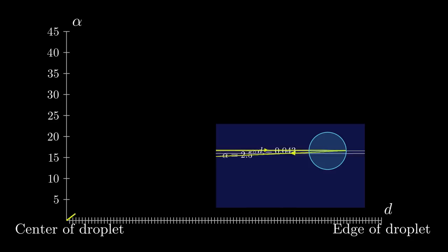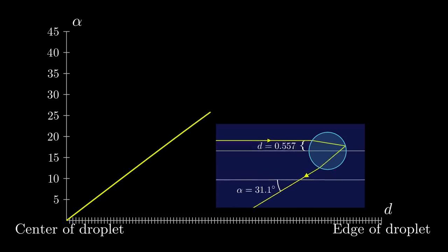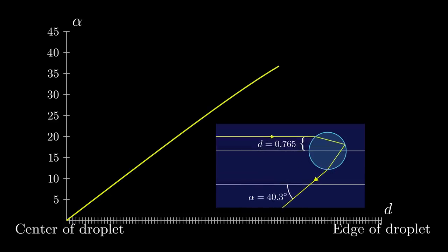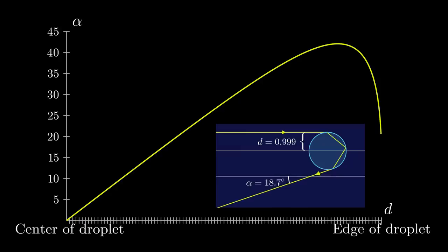We start at d equal to 0, which means that the ray hits at the center and the angle is 0, too. When d increases, at first the angle alpha increases too, but after a while the graph flattens out and the angle reaches a maximum. When the ray moves even further from the center, the angle actually becomes smaller again.